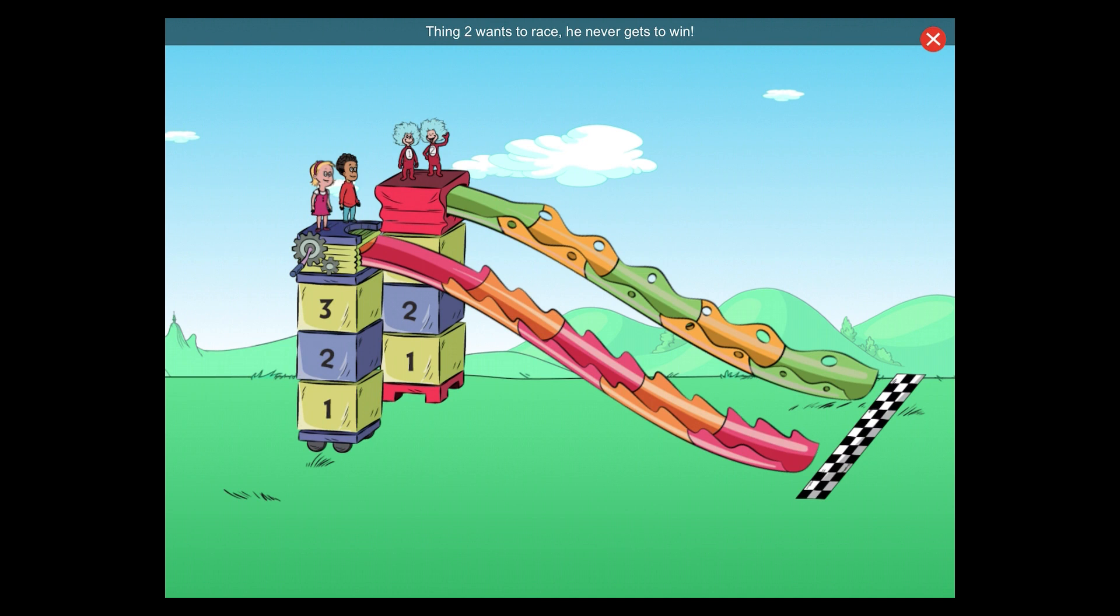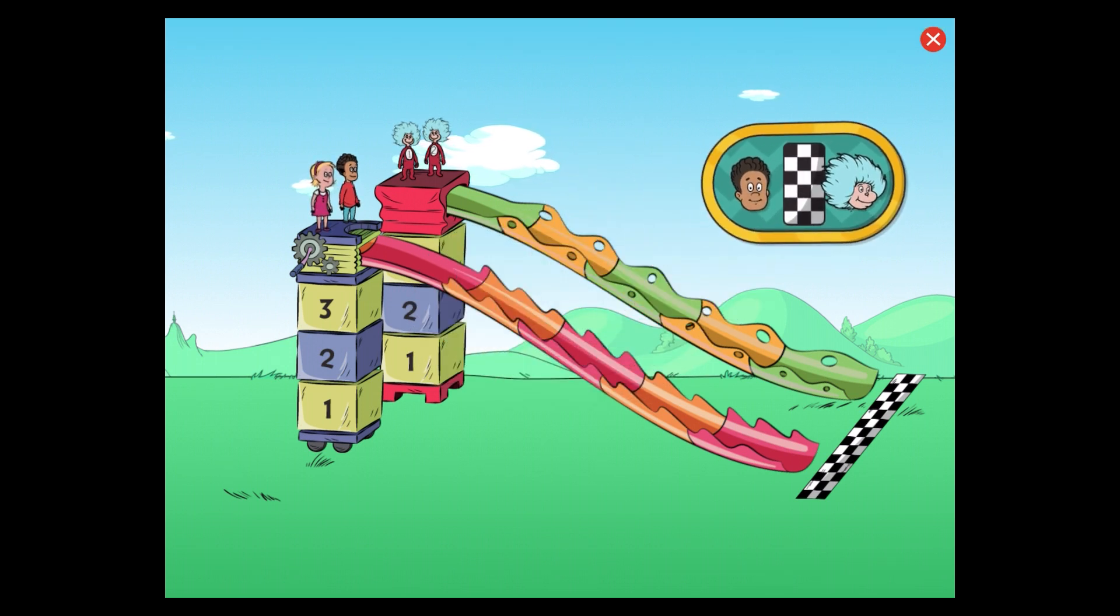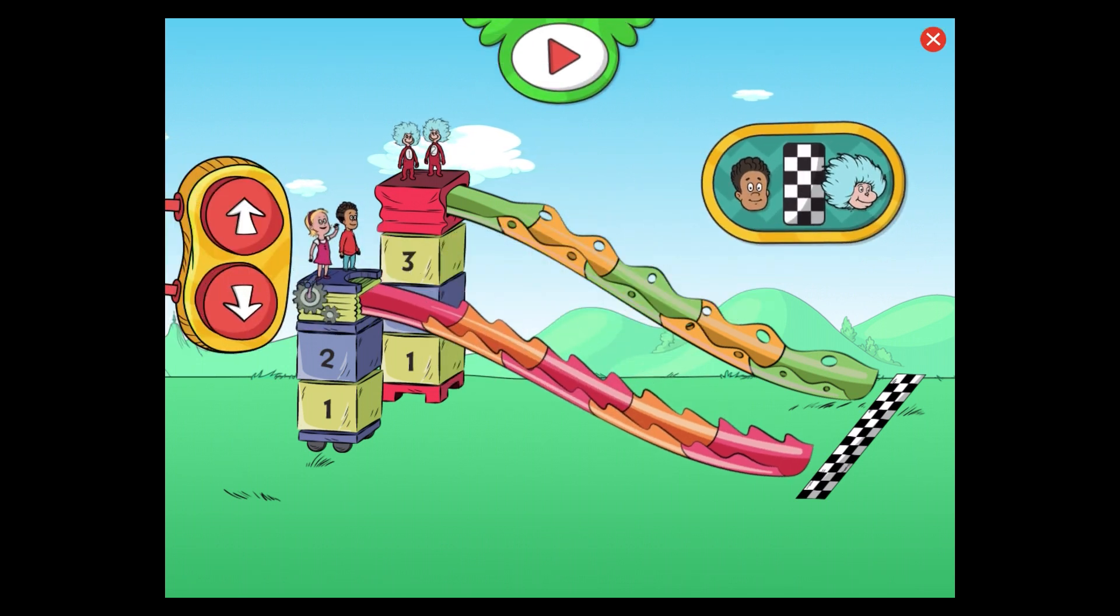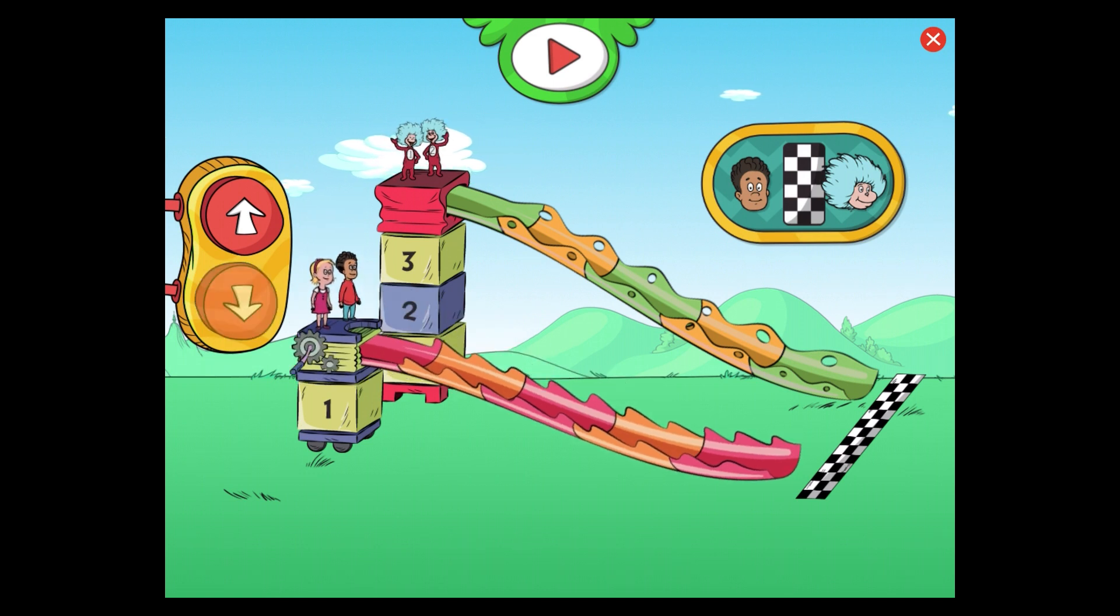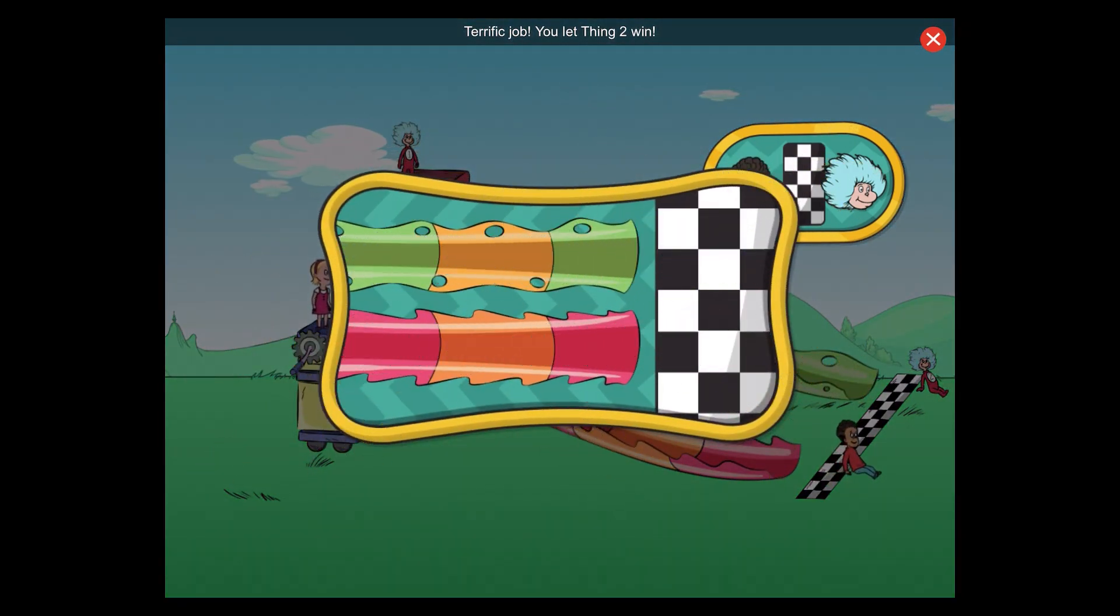Thing two wants to race. He never gets to win, so let's let him go faster and win. Your goal is to come in second place. Woo-hoo! Terrific job! You let Thing two win!